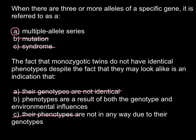Answer C is just a rephrasing of answer A, so it is also not correct. We are left with only answer B. If you take cuttings from a plant, these are going to be perfect clones obtained by an asexual method, and if you plant them at different elevations in the mountains, you would expect the height to be different depending on the elevation.